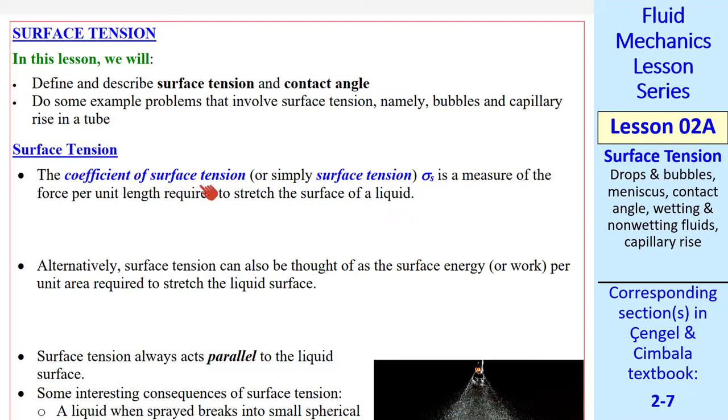What is surface tension, or the coefficient of surface tension? It's a measure of the force per unit length required to stretch the surface of a liquid. We give it the symbol sigma s. If this is the surface of a liquid, and we stretch it with some force f, pulling it apart, the force per unit length into the page here required to stretch this surface is the surface tension. The dimensions of surface tension are thus force per length. Typical units are newtons per meter.